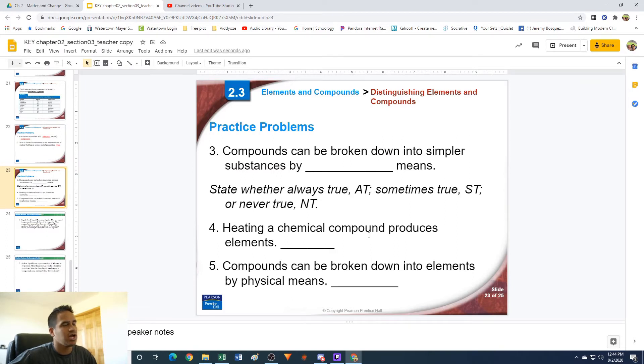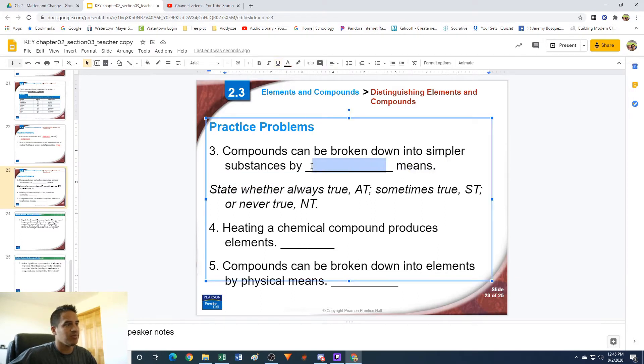Number three: compounds can be broken down into simpler substances by blank means. Remember that compounds can be broken down into simpler substances, but they have to be broken down by chemical means, not physical means. You have to actually break it apart using chemical means, and afterwards that compound is now gone. It doesn't exist anymore. You've made it into new materials.